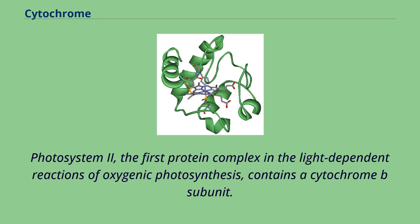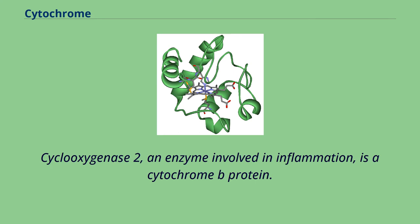Photosystem II, the first protein complex in the light-dependent reactions of oxygenic photosynthesis, contains a cytochrome B subunit. Cyclooxygenase II, an enzyme involved in inflammation, is a cytochrome B protein.